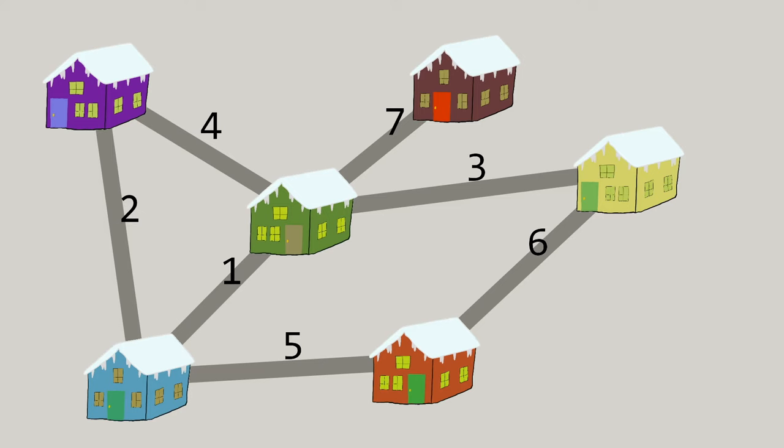So where do we start? Well, an intuitive thing to do might be to start with the road that requires the fewest volunteers to clear it. After all, if we're looking for a network of roads that collectively requires the fewest volunteers, starting with the easiest road to clear feels like a reasonable thing to do.